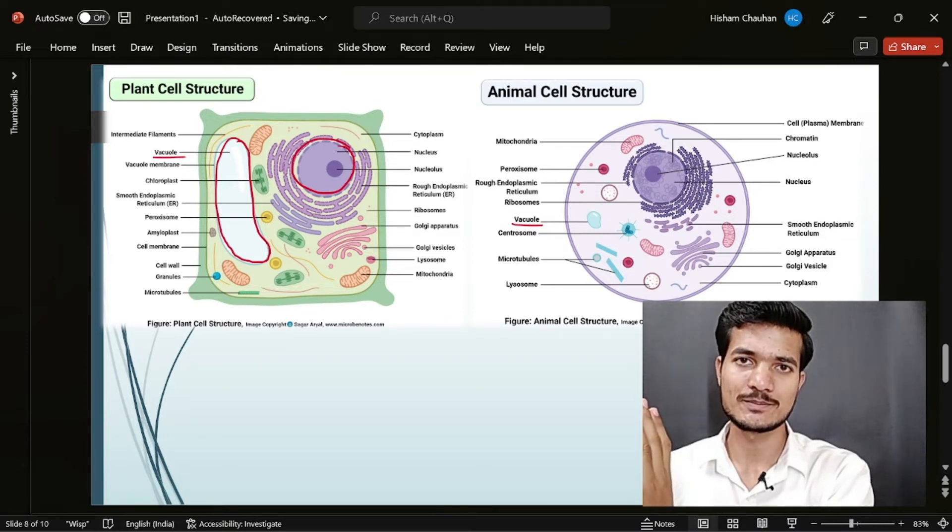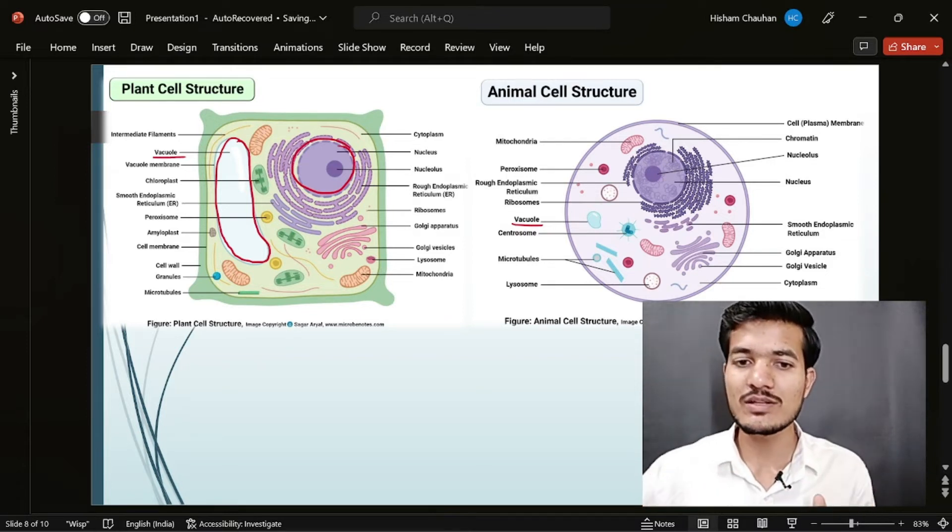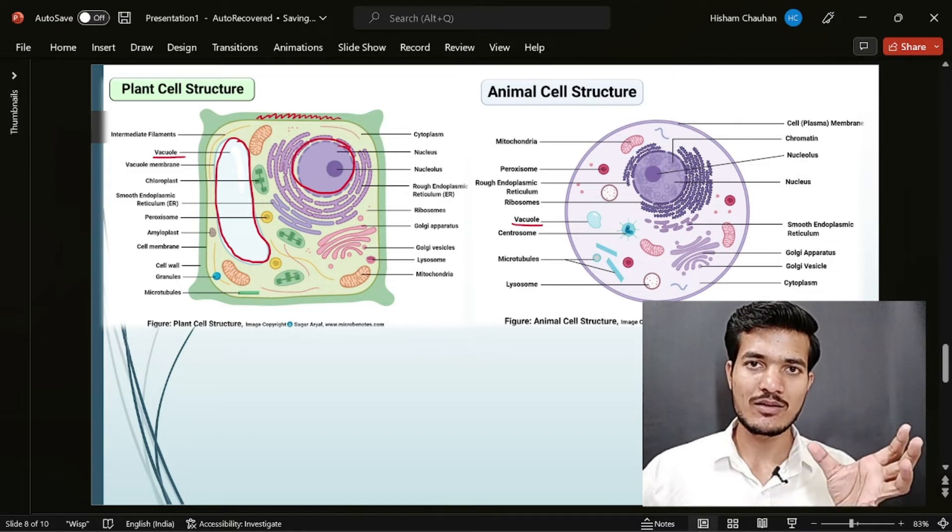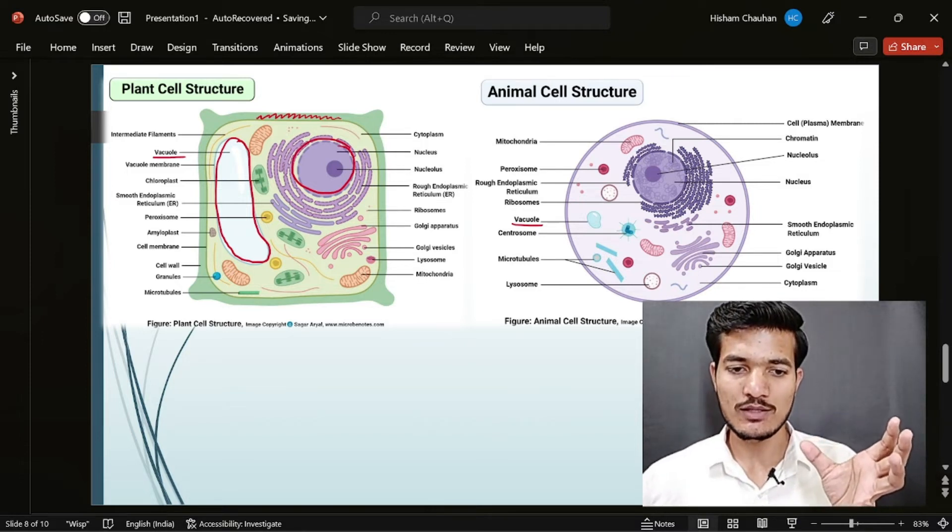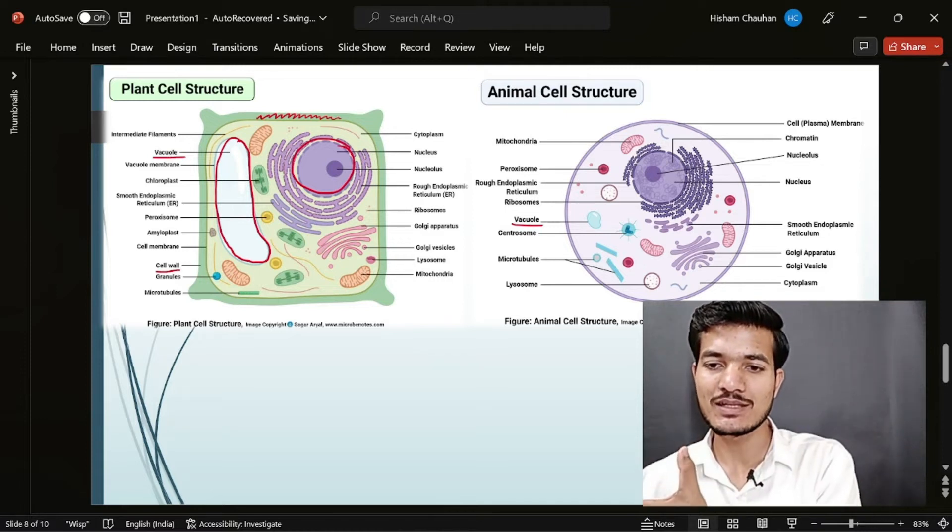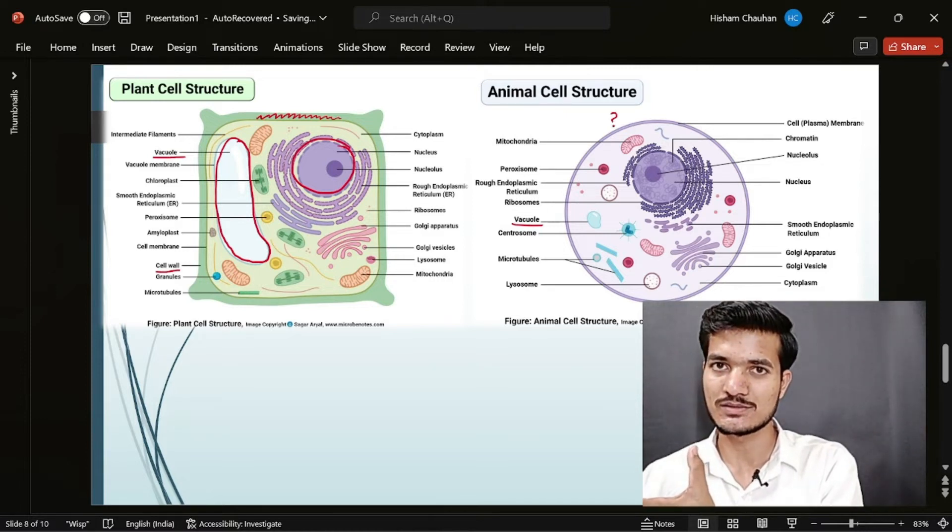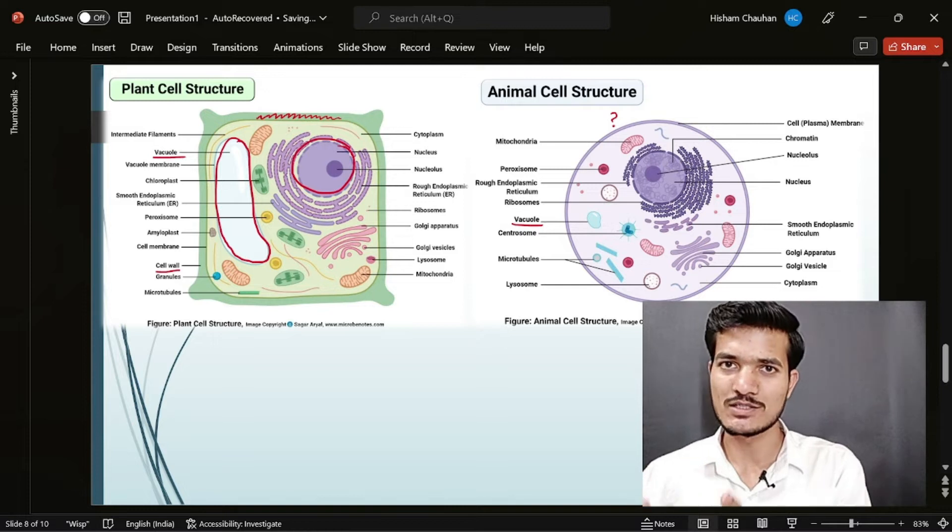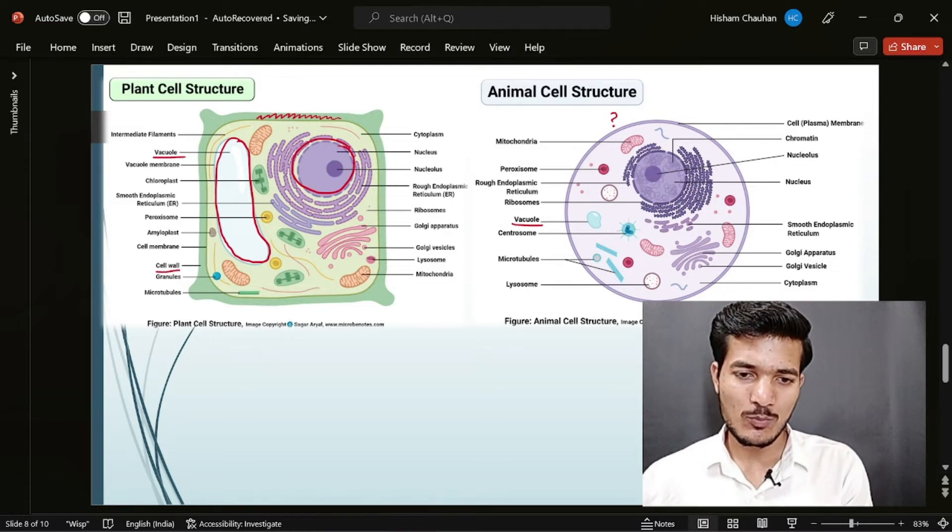What is the next difference? There is a thick wall around plant cell, which is what we call a cell wall, which is absent in the animal cells.